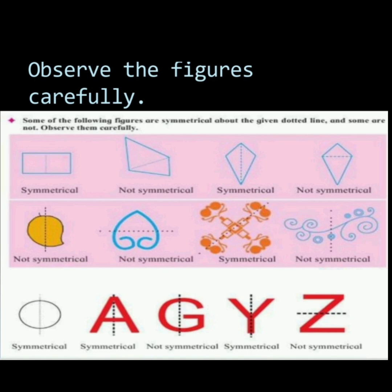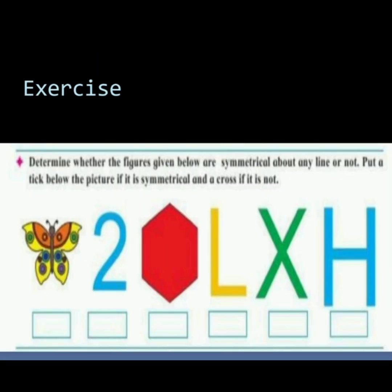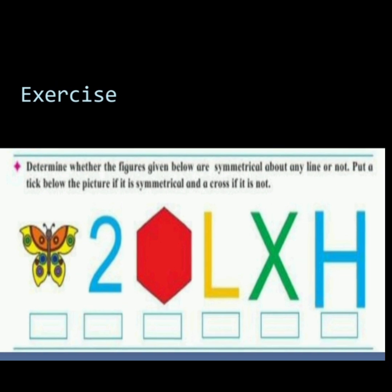Let's observe some of the following figures which are symmetrical about the given dotted line and some are not. Now let's solve the given exercise. Determine whether the figures given below are symmetrical about any line or not. Put a tick below the picture if it is symmetrical and a cross if it is not.